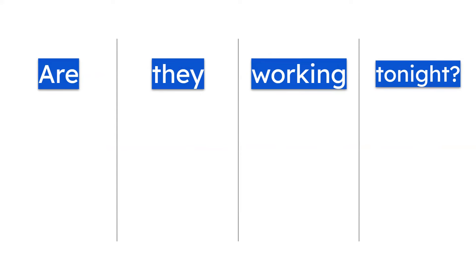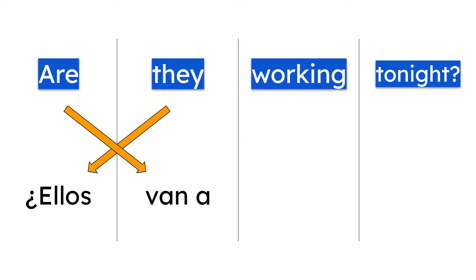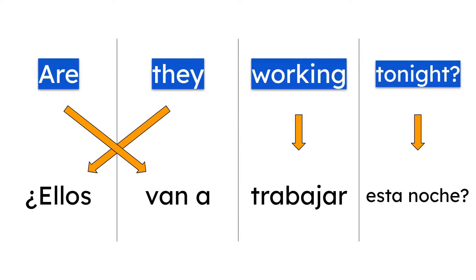Last question: 'Are they working tonight?' Is this action happening in the present or in the future? Tonight is future, so we need the structure with van. Ellos van a trabajar — the verb to work is trabajar. ¿Ellos van a trabajar esta noche? Hey, do you know if they are working tonight? ¿Sabes si ellos van a trabajar esta noche?